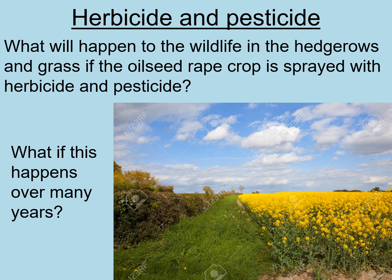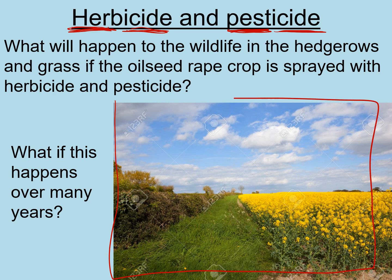The next thing we're going to look at is the use of herbicides and pesticides. The word 'herb' means plant and '-icide' means to kill, so a herbicide is a chemical that kills plants like a weed killer — but it only kills the unwanted plants, not the crop. Pesticides: 'pest' means small organisms that might eat your crop, such as locusts or caterpillars, and '-icide' means to kill them off. In this image we have oilseed rape — the crop we're trying to grow — and at the edge of the field you have a grass border and hedgerows.